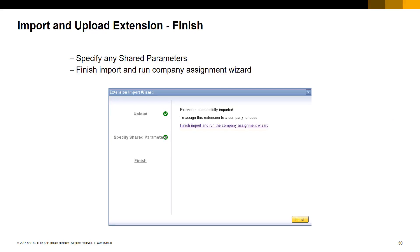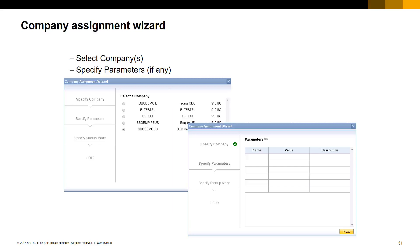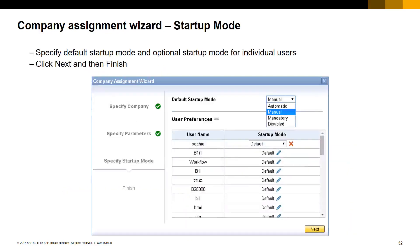You will get an 'extension successfully imported' message as a result. Once the extension package is imported, we can proceed to the assignment of our extension to the different SAP Business One company databases. You can run the company assignment wizard directly from the import wizard using the link on the results message, or go to the Company Assignment tab. You can select one company database at a time and define the default startup mode for the app: manual, automatic, mandatory, or disabled. This determines how the extension is launched for all users connected to the assigned company. You also have the option to select a different startup mode on a per-user basis. After you press Finish, the deployment is complete. Users can now consume the app in SAP Business One.